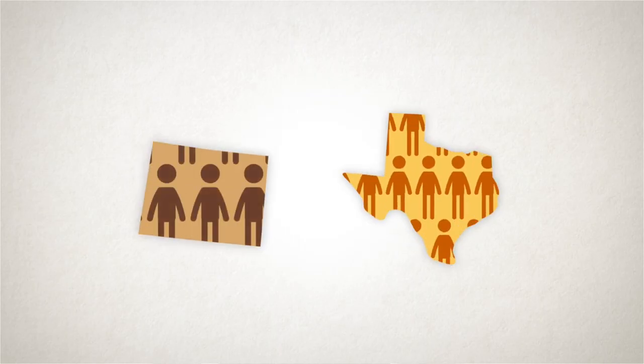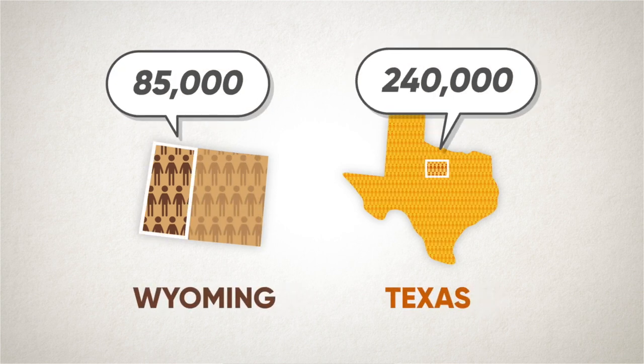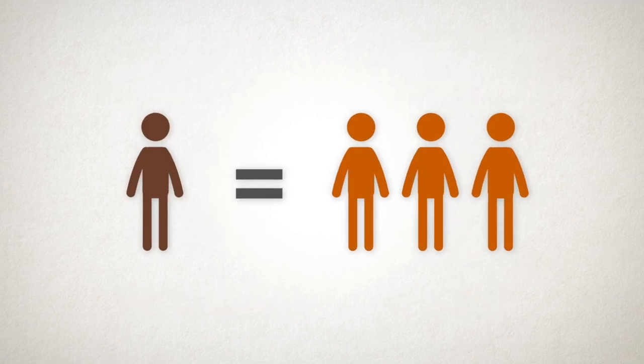Some support fractional proportional because it doesn't eliminate the smaller state advantage or change federalism like a national popular vote would. This is also why some supporters of a national popular vote don't think fractional proportional goes far enough — smaller states would maintain an electoral advantage. Those smaller states are pretty evenly divided between Republicans and Democrats, so that's not likely to create any partisan advantage.